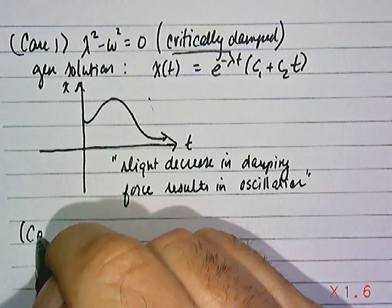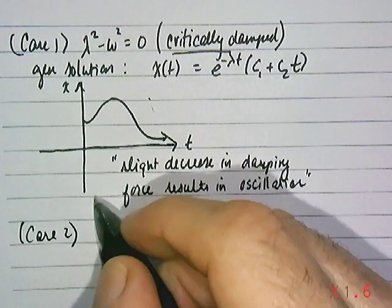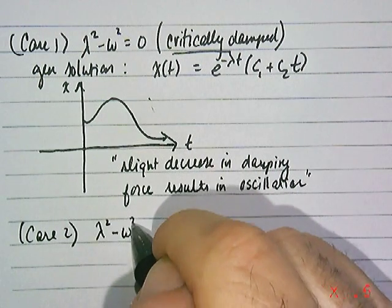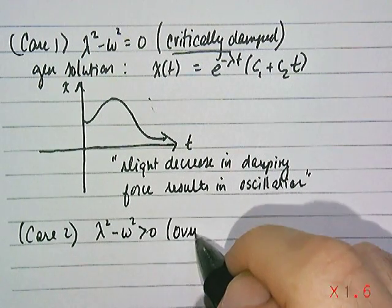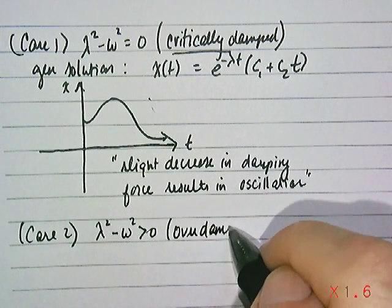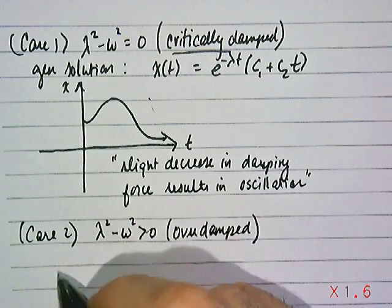Second case, let's take the case where what's under that radical is greater than zero. This is called overdamping, or an overdamped spring system.